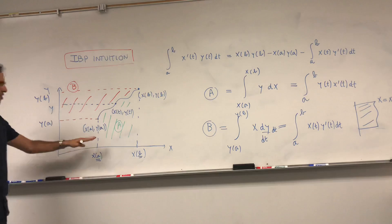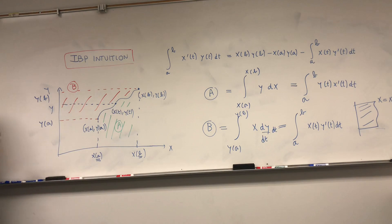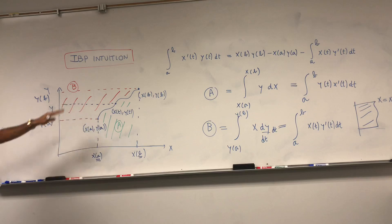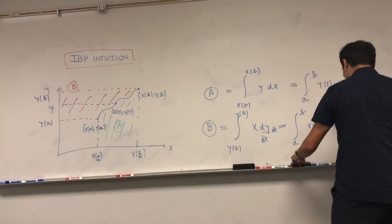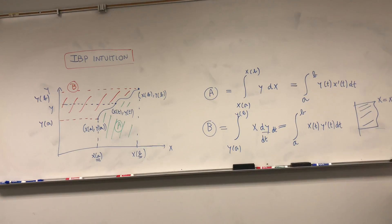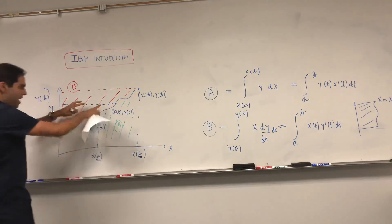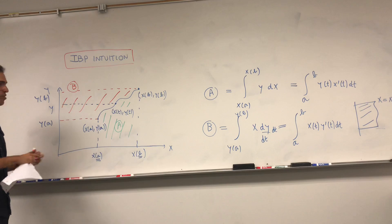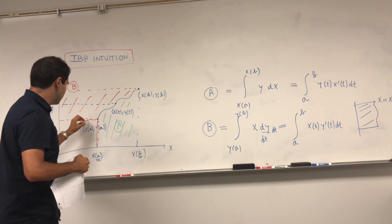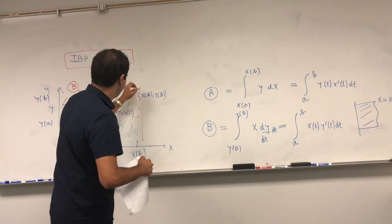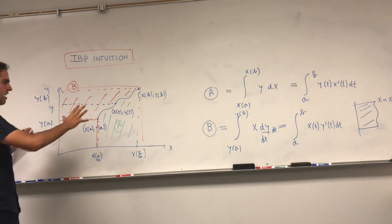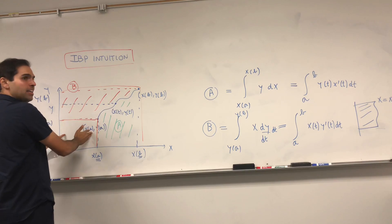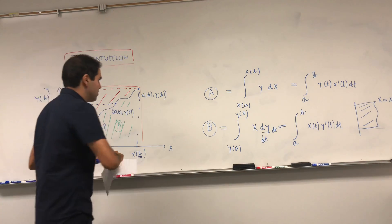We've calculated A and B. Now, integration by parts is another way of interpreting the sum of these areas. Adding those two regions together gives us a Tetris-block shape, which is precisely the difference of two rectangles — the big rectangle minus the small rectangle. So A plus B equals the area of the big rectangle minus the area of the small rectangle.